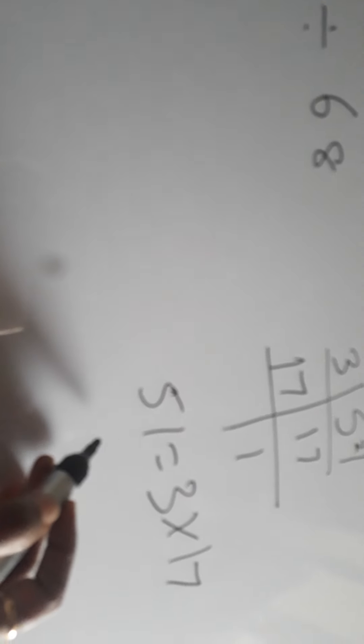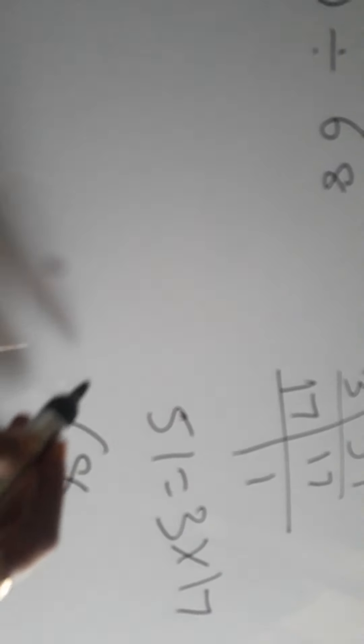Now let's see 68. Same pattern, let's follow. Now it is an even number in the units place, so it is divisible by 2. 2 3s are 6, 2 4s are 8.